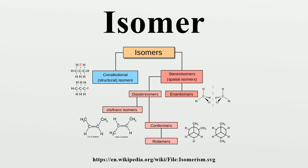Another type of isomers, conformational isomers, may be rotamers, diastereomers, or enantiomers depending on the exact compound. For example, ortho-position locked biphenyl systems have enantiomers.